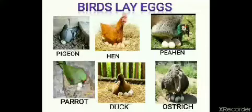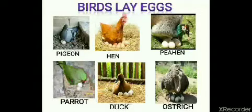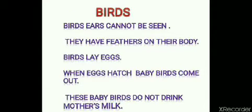Now look at the picture of these birds — a pigeon, hen, peahen, parrot, duck and ostrich with their eggs. Birds lay eggs. Now let us discuss the special features of birds. Birds' ears cannot be seen. They have feathers on their body. Birds lay eggs. When eggs hatch, baby birds come out. These baby birds do not drink mother's milk.